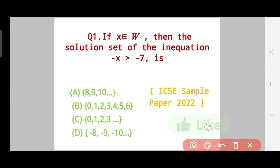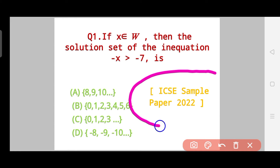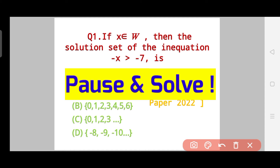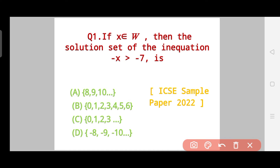Question 1: If X belongs to whole numbers, then the solution set of the inequation -X > -7 is — Option A: {8, 9, 10, ...}, Option B: {0, 1, 2, 3, 4, 5, 6}, Option C: {0, 1, 2, 3, ...}, Option D: {-8, -9, -10, ...}. This is an ICSC sample paper 2022 question, so solving it gives you the advantage of having solved a sample paper question. The correct answer is Option B.